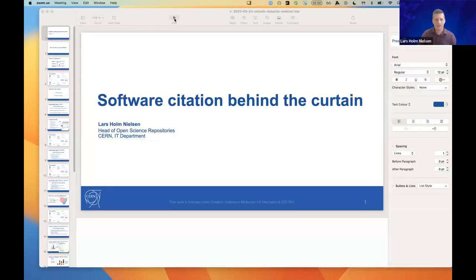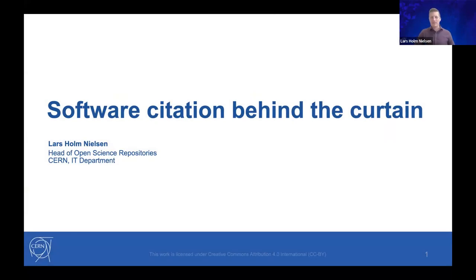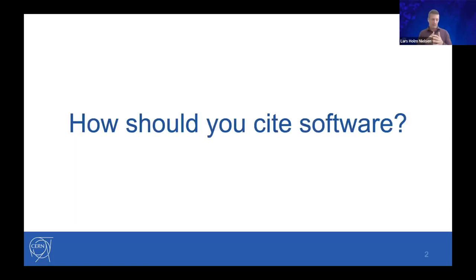My name is Lars Holm Nielsen. I'm from CERN and I lead the team responsible for Zenodo. You've just heard that research software is an important part of research itself. The question is: how should you cite software? Before answering that, I'm going to take you on a little tour of the infrastructure behind software citation — basically, how does the entire banking system look that accounts for all these citations, and what are some of the challenges involved?